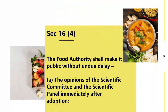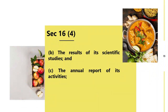Subsection 4: the Food Authority shall make public without undue delay the opinions of the Scientific Committee and Scientific Panels immediately after adoption. This is a duty of the Food Authority — they must immediately put scientific committee opinions into the public forum. Also, the results of scientific studies conducted by FSSAI must be in the public domain, along with the annual report of its activities.